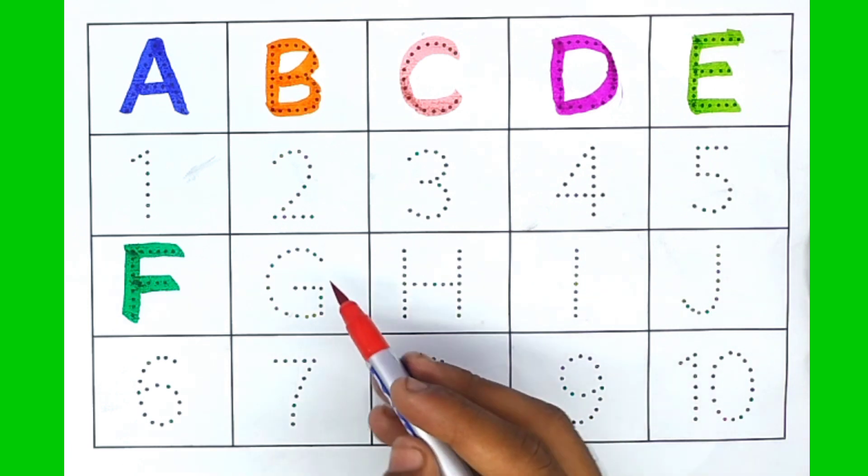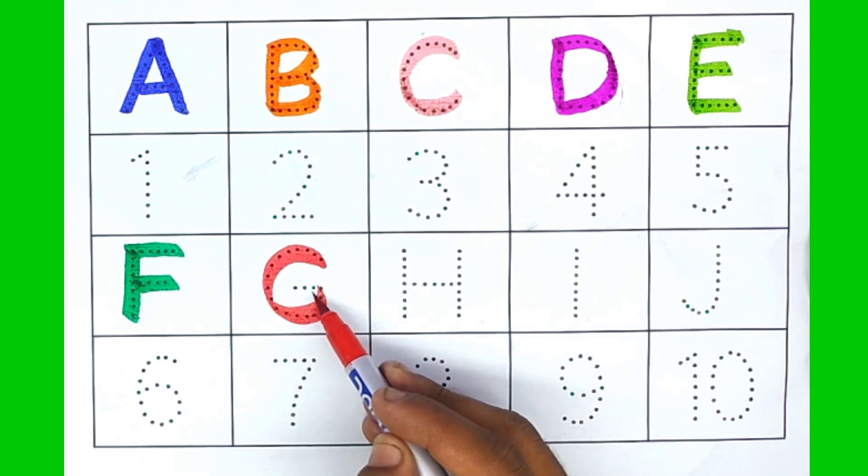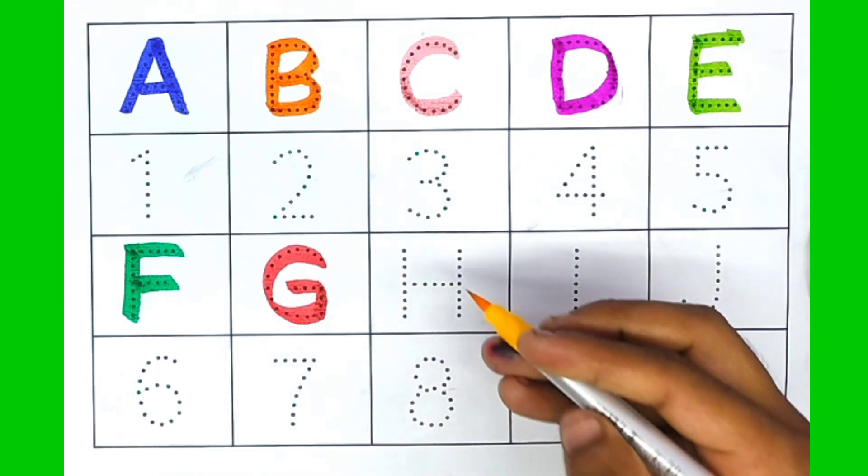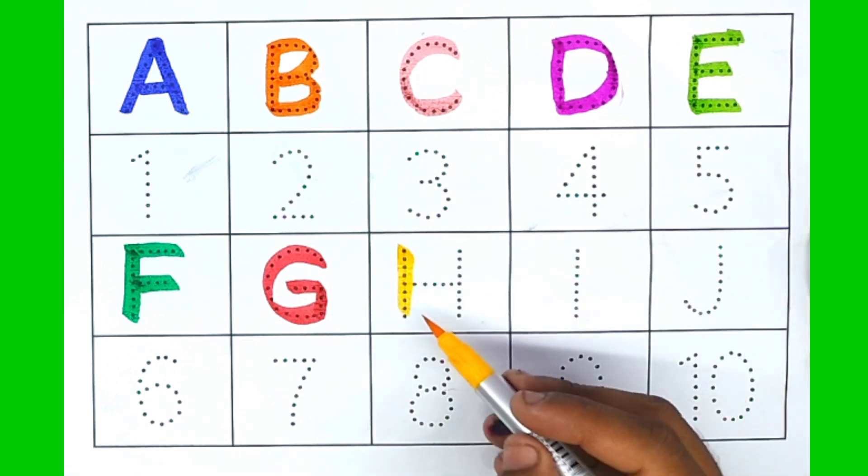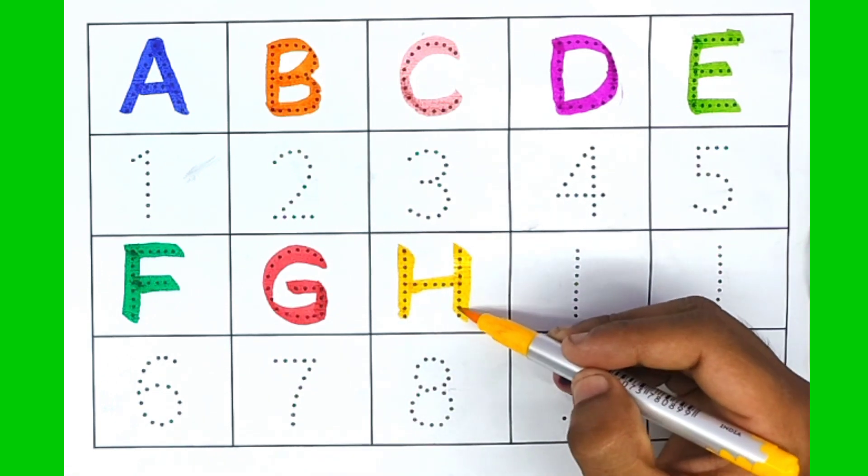Red color. G. G for grapes. Yellow color. H. H for hen.